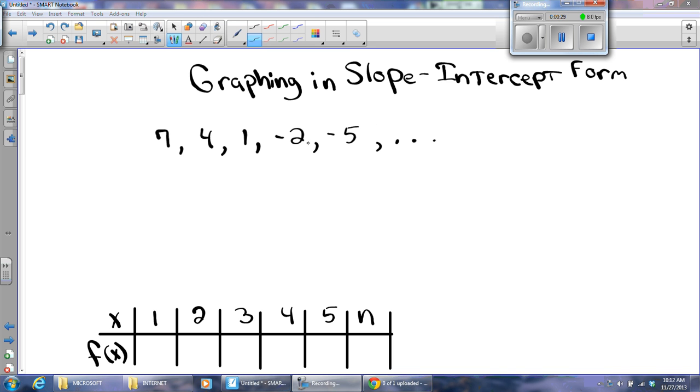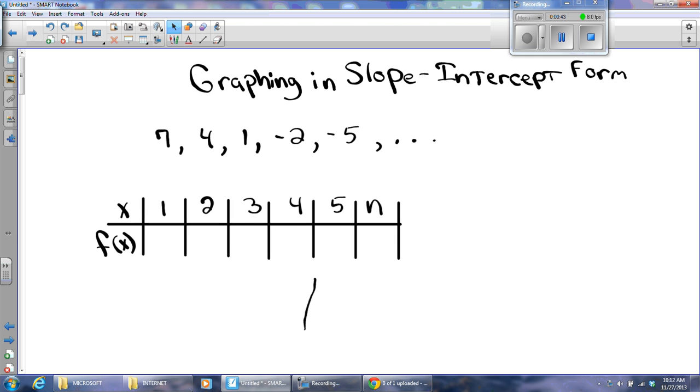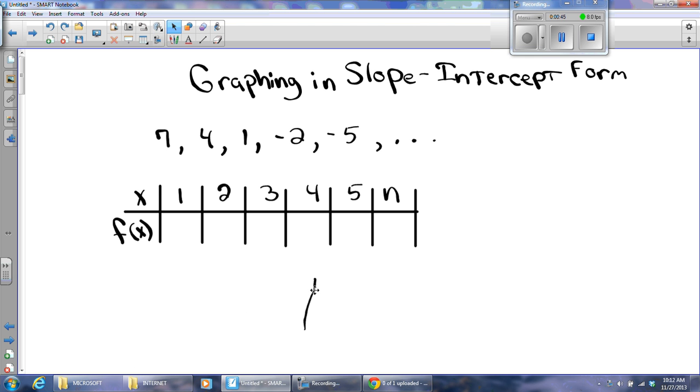Let's just get right to it. Now remember we were solving for the nth term. We had to write an equation. We'd have a series like 7, 4, 1, negative 2, negative 5, and then we made this input-output table. We have this t-table, or this input-output table as I've been calling it, and we fill in the numbers here: 7, 4, 1, negative 2, and negative 5.